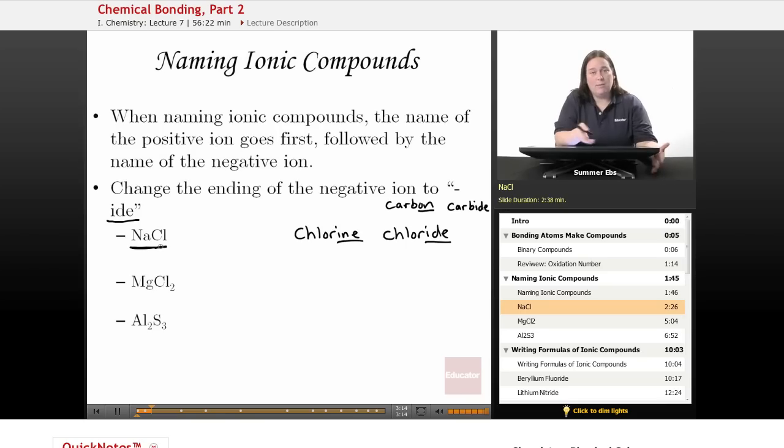So I have NaCl right here. Since we're naming ionic compounds—one metal, one non-metal—the positive ion is sodium. If you don't remember the symbols, go back to your periodic table and look for Na. Na is in group one, which has an oxidation number of +1. That's how we know it's the positive ion.